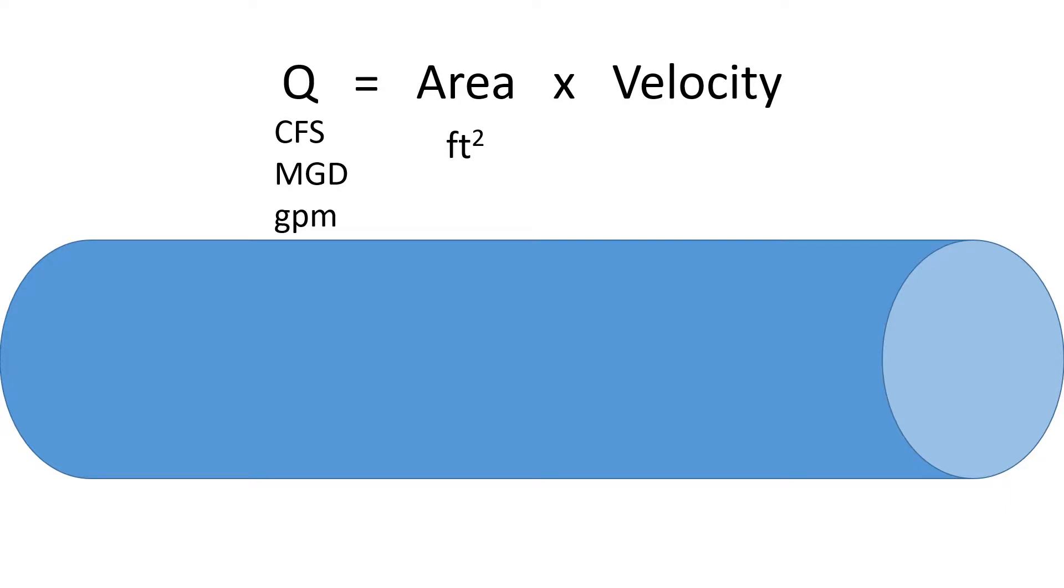The area is in square feet. Notice the diameter is typically what we're given, and they give it to us in inches, so we need to take that diameter in inches divided by 12 to get the diameter in feet.